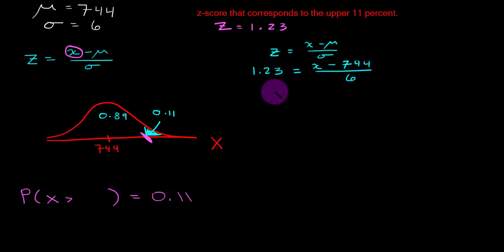Multiplying both sides by 6 results in the left-hand side being 7.38. And we've got x minus 744. Adding 744 to both sides gives us the solution of 751.38.